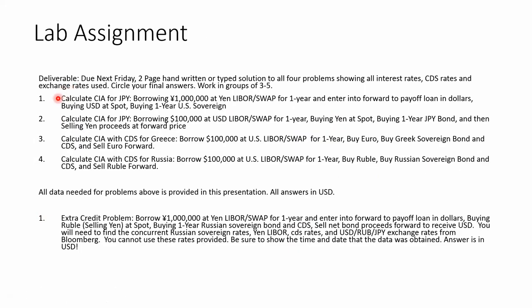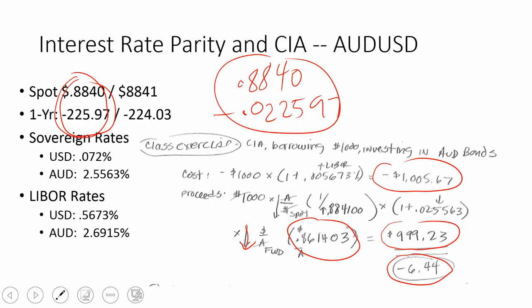Here is your lab assignment. You should be able to do all four problems; they'll be due next Friday in groups of three to five people. I'd like you to do it on about two pages, handwritten. The handwritten solutions will look a lot like these solutions — four solutions that look similar to this one. This one is borrowing dollars; if you were borrowing a foreign currency it would look a little different. Show all the exchange rates used, when you flipped them, and how you added the pips.